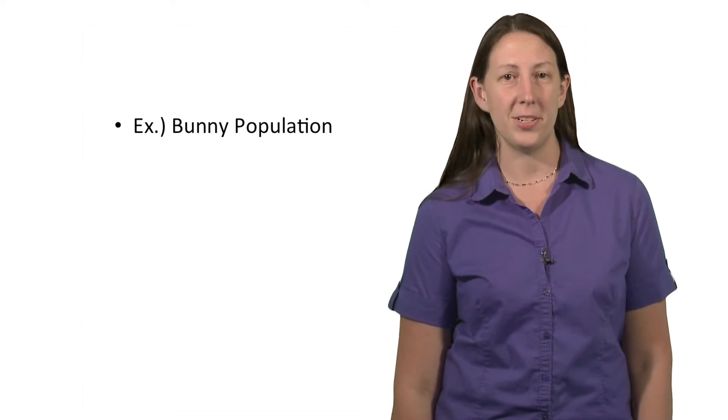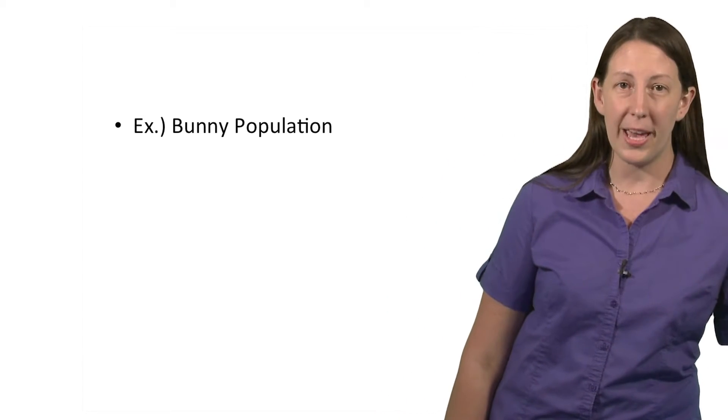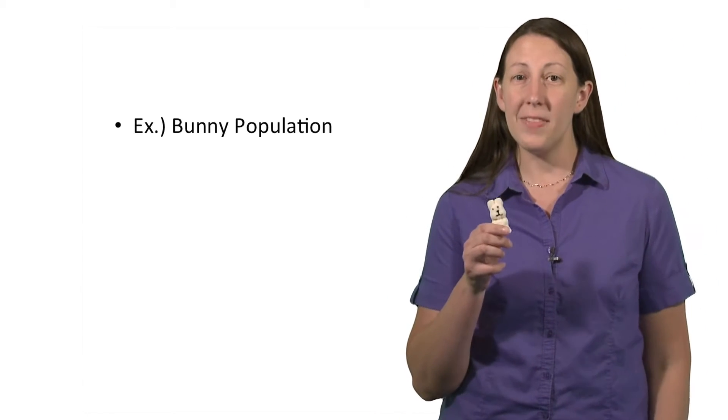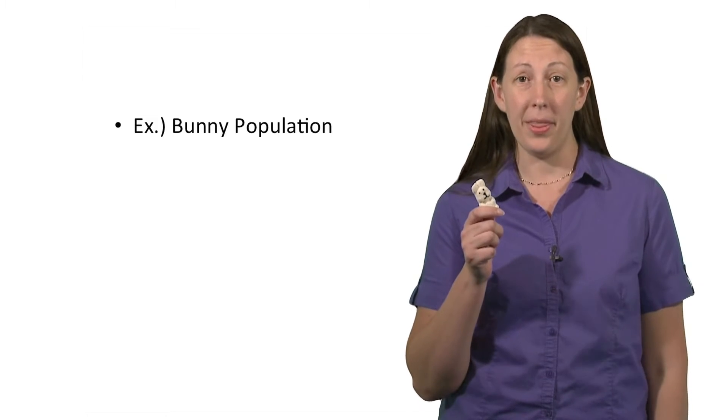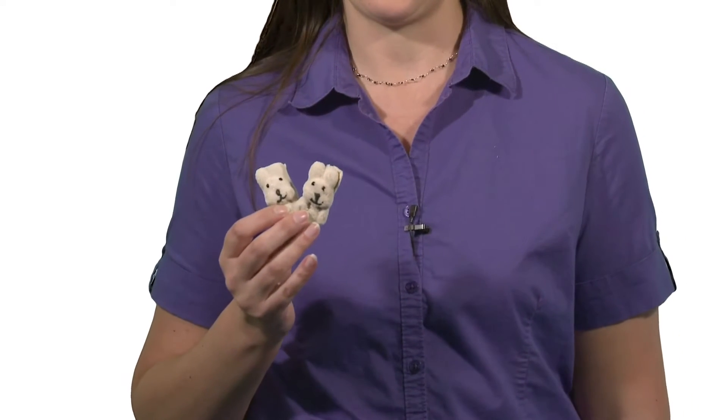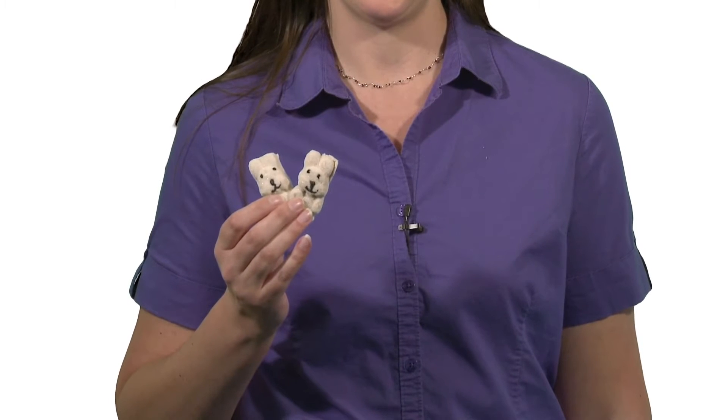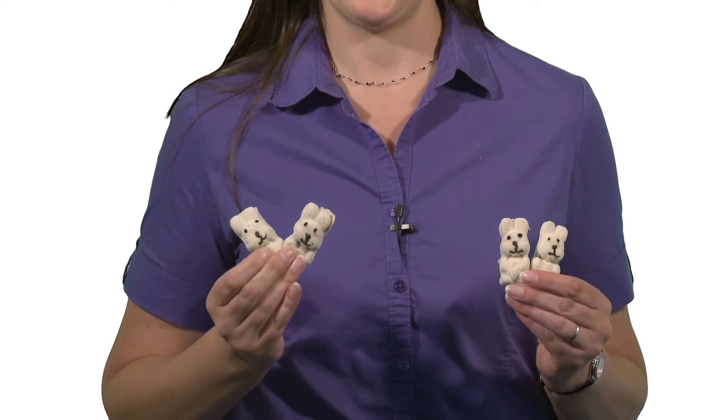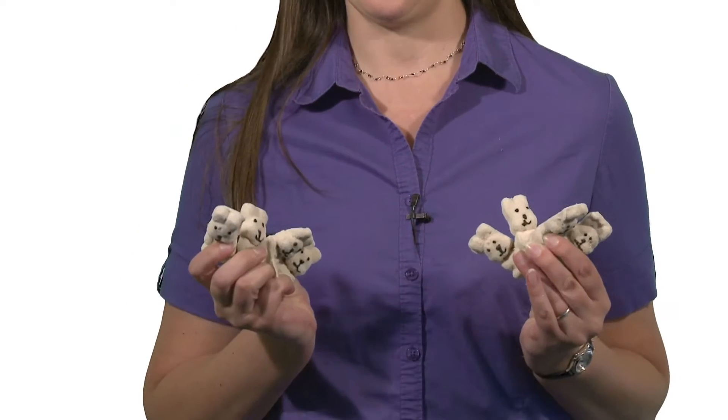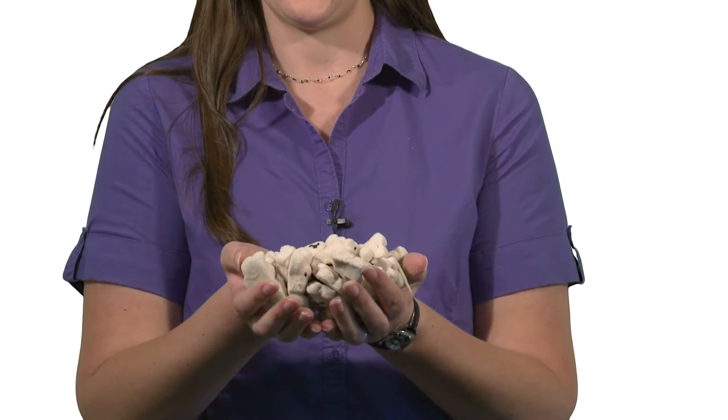Let's begin by looking at an example to understand why we need the exponential and logarithmic functions. Suppose we have a bunny, and if this bunny has a bunny every month, after one month we'd have one bunny. After two months, we would have two bunnies. After three months, each of those two bunnies would have a bunny, and we'd have four bunnies. If each of those four bunnies had a bunny, we would have eight bunnies, and so on, and eventually we'd have a ton of bunnies.